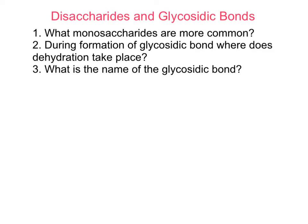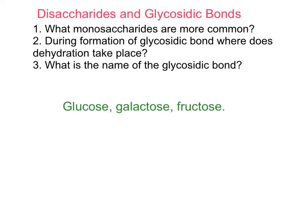To characterize a disaccharide, we need to know what monosaccharide units are forming it, and which anomer — alpha or beta — is part of the glycosidic bond. The most common monosaccharides are glucose, galactose, and fructose.